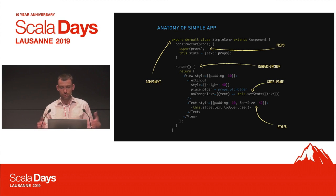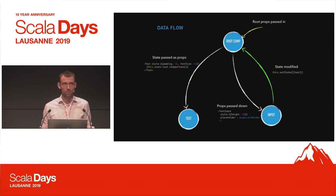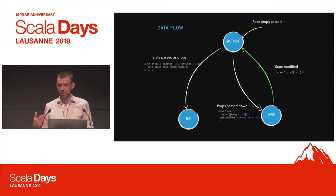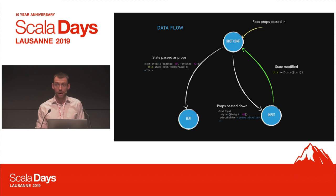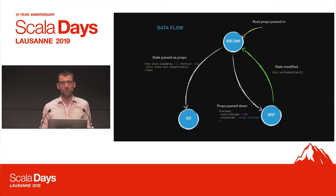From a data flow perspective: you have the root component, the initial state is set based on props, and props are passed down to the input. When the input modifies the state, it calls setState via the callback. This triggers reevaluation of the root component's render function, and the content changes on screen.